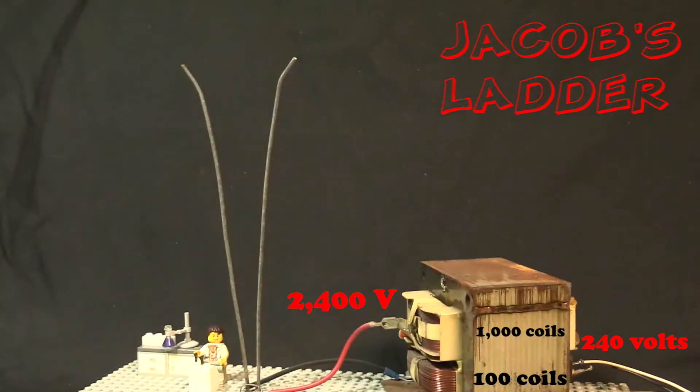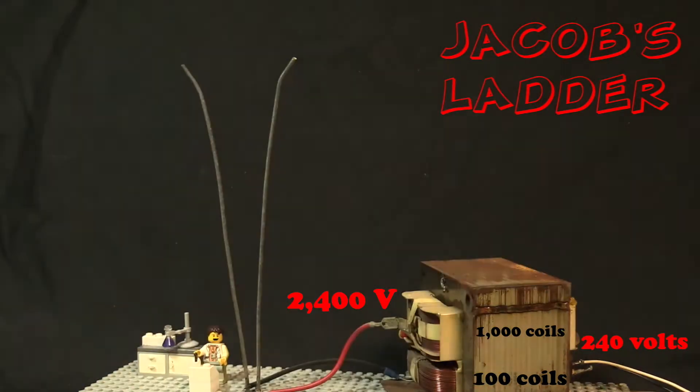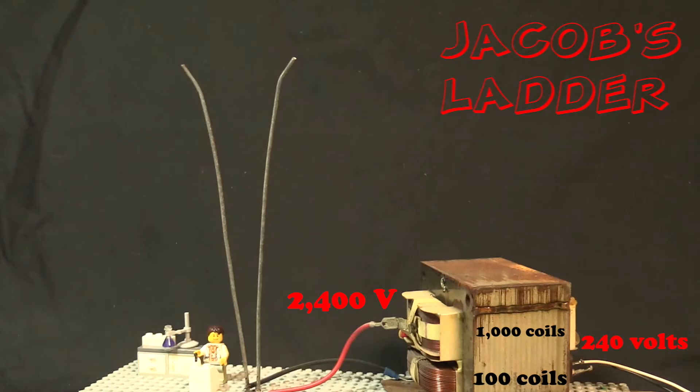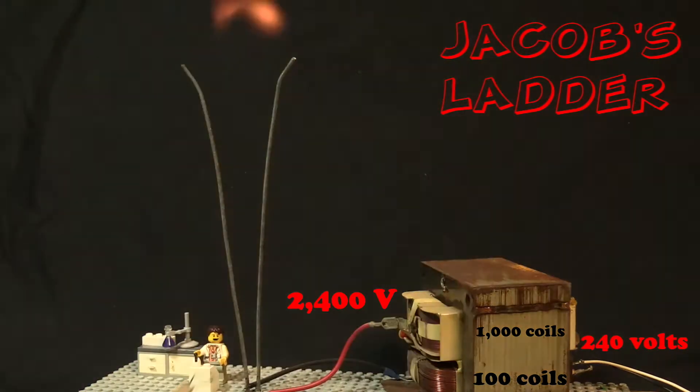There's a high enough voltage that the arc will jump two and a half centimeters through the air. As the arc heats up the air, the air becomes ionized and turns into plasma. The effect of the plasma and the heat causes the electric arc to rise up.